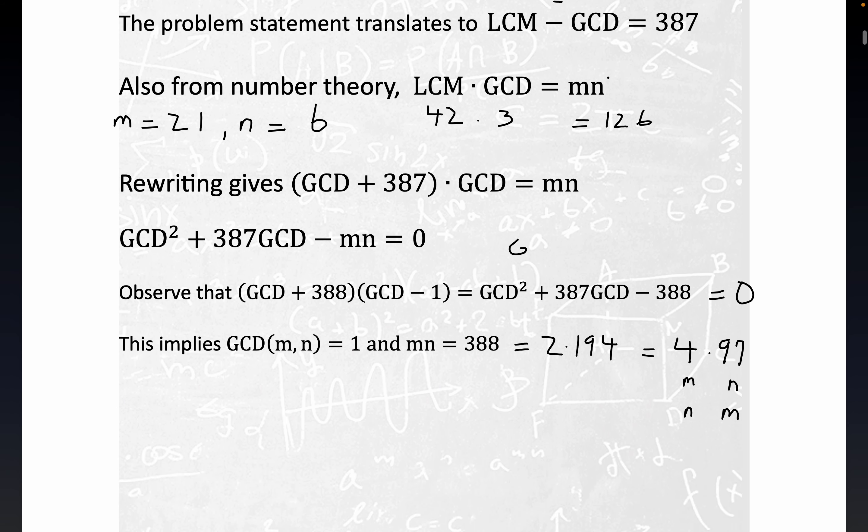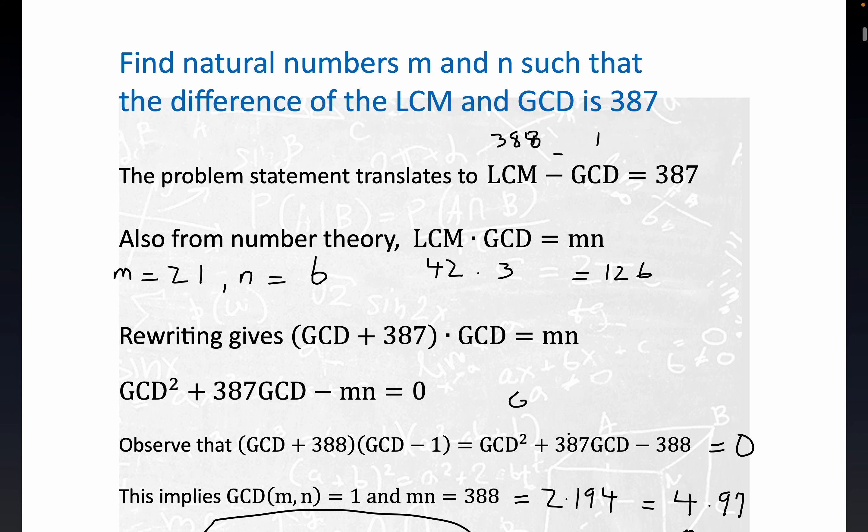So the two solutions that I found would be M equals 4 and N equals 97, or the other way around. You could write M equals 97 and N equals 4. These are the two I found. You could call this the same solution if you wanted, really, up to permutations. I don't know if this is the only solution. This looks simple enough. Maybe there's another way to factor this around.